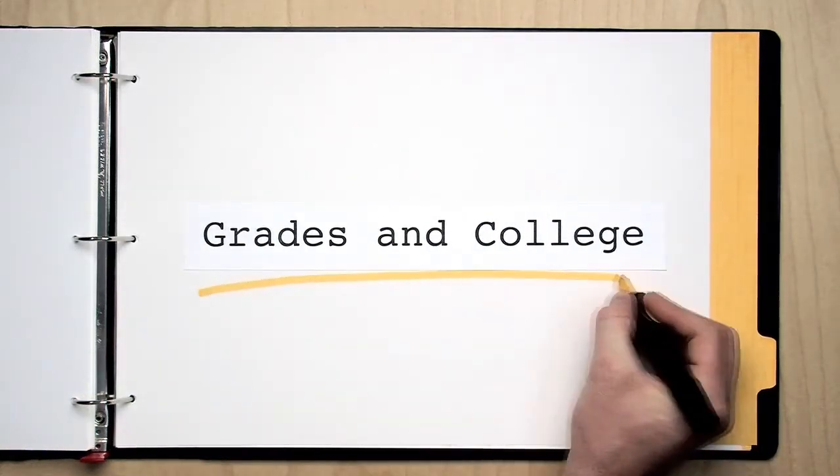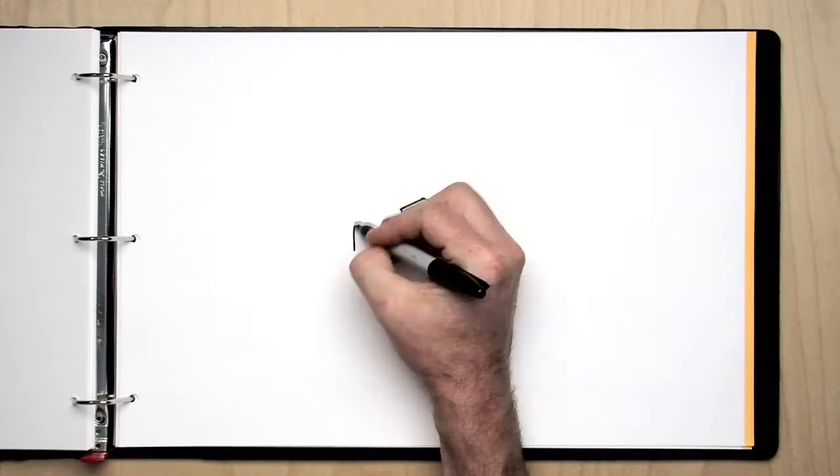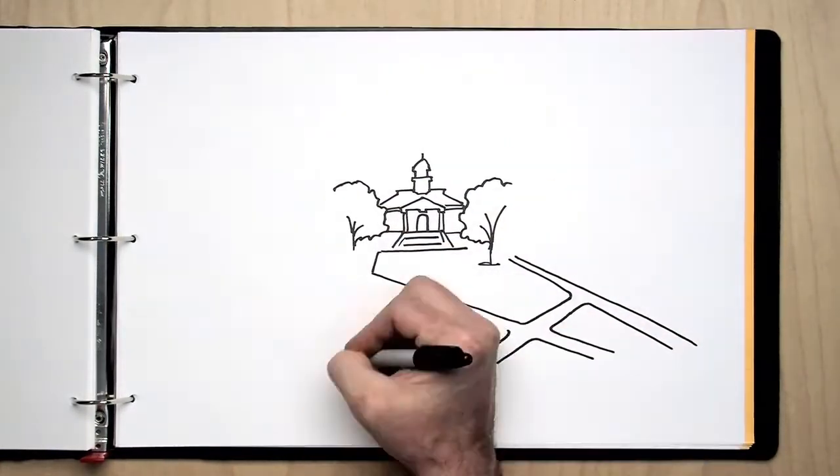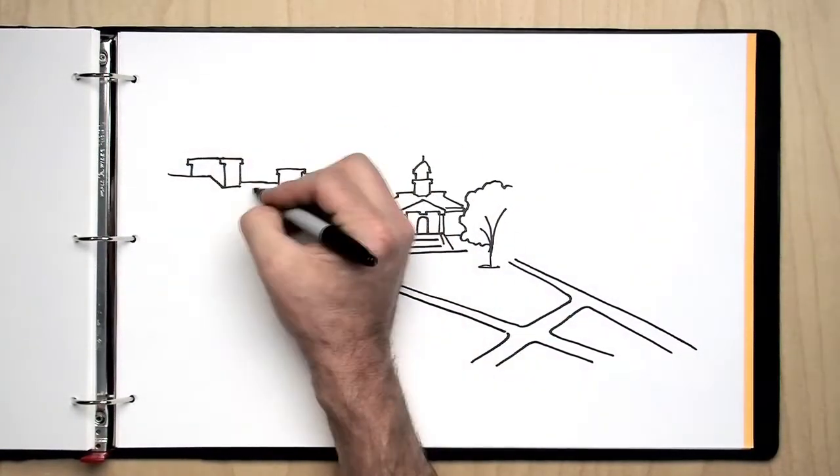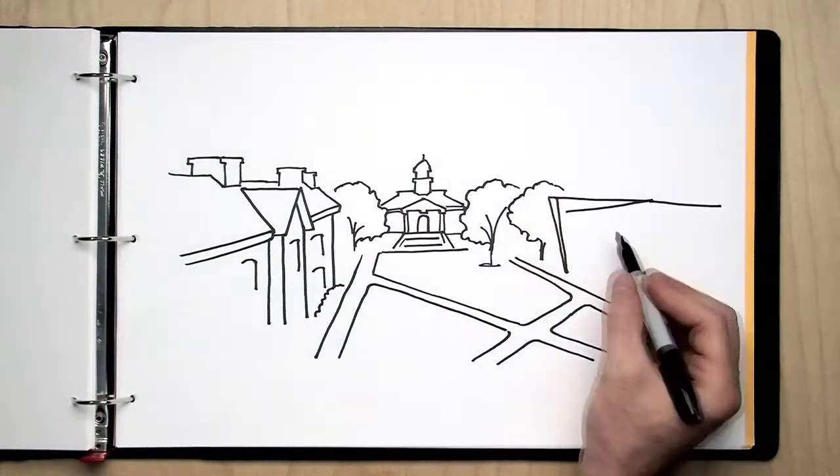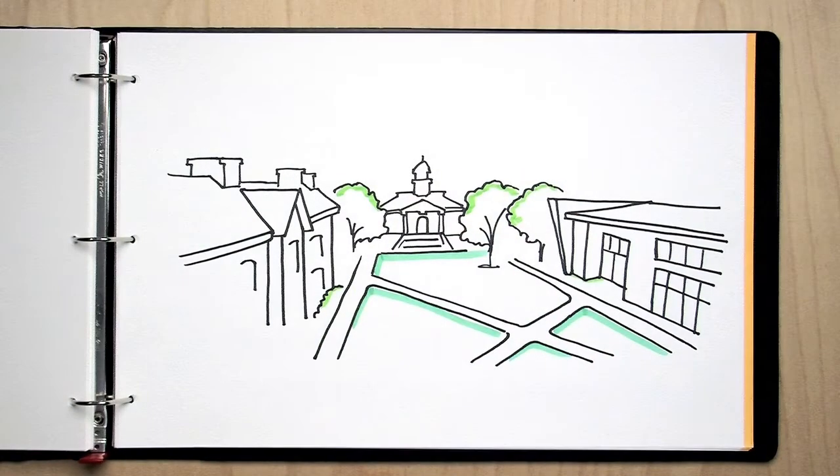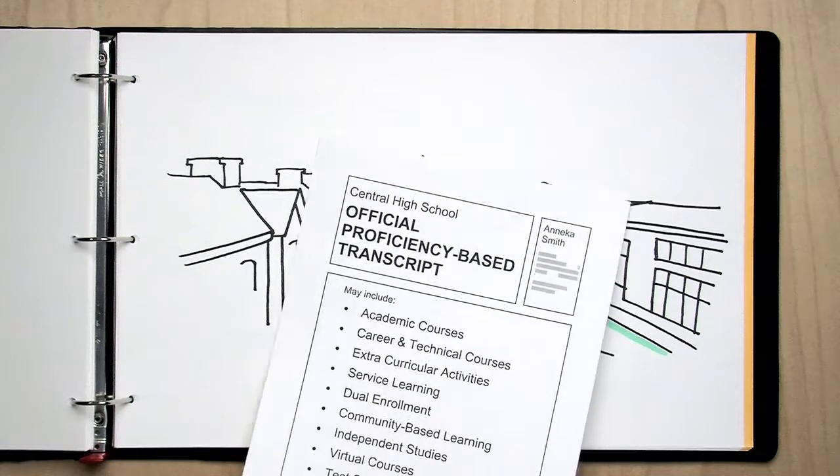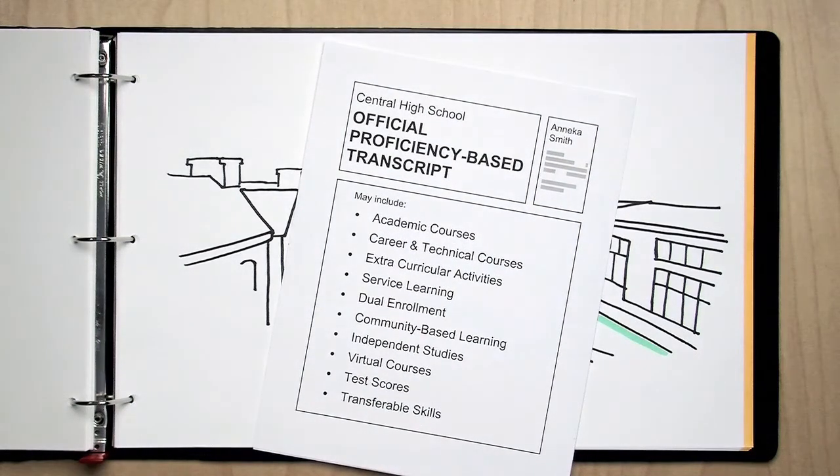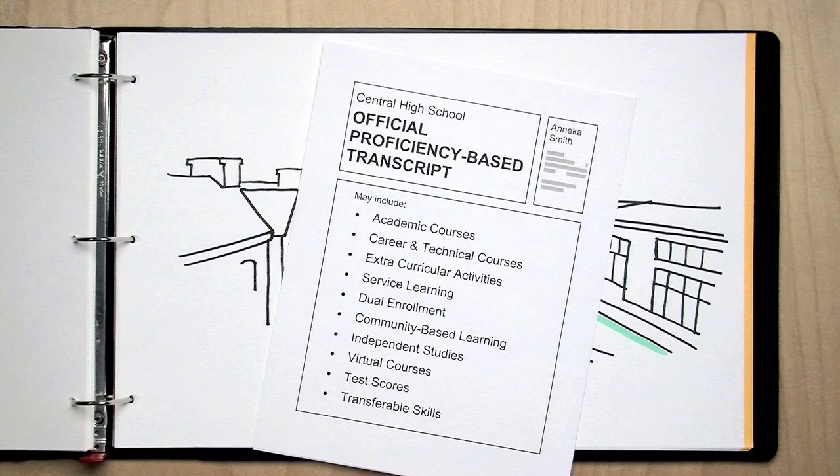Grades in college. Some people are concerned that not having a traditional report card will hurt their chances of getting into college. Well, the fact is that many colleges have already been looking at proficiency-based transcripts for years. When they see you have achieved proficiency in a subject, it tells them what content and skills you have actually mastered, rather than the vagueness of a grade. A proficiency-based transcript will also give a better picture of who you are by including things like career and technical courses, dual enrollment courses, internships, service learning, and independent studies. Some transcripts may include standardized test scores.